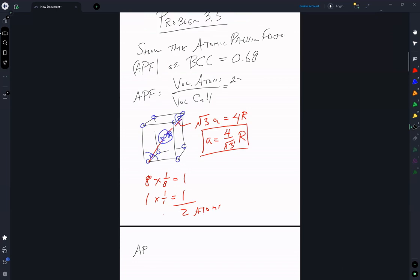Two times 4 thirds pi r cubed divided by 4 over square root of 3r quantity cubed. Recognizing here that that's a cubed.